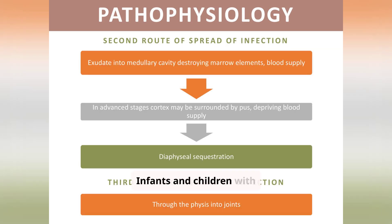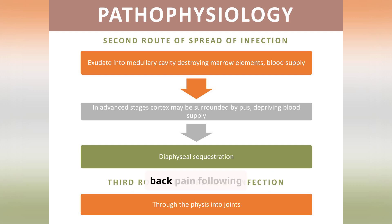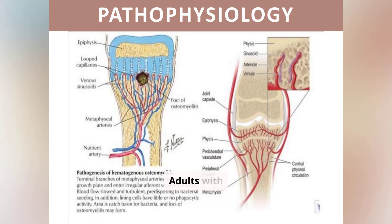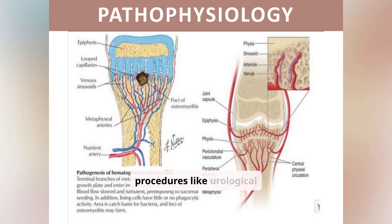Infants and children with osteomyelitis show symptoms like failure to thrive and joint tenderness, while adults often experience back pain following urological procedures. Adults frequently report thoracolumbar spine pain and mild fever after such procedures, often accompanied by localized tenderness.